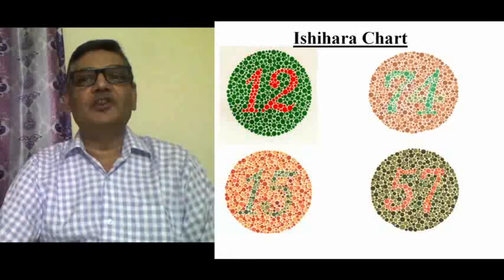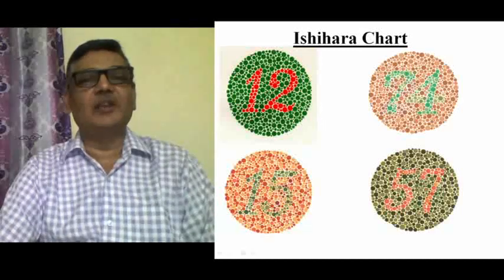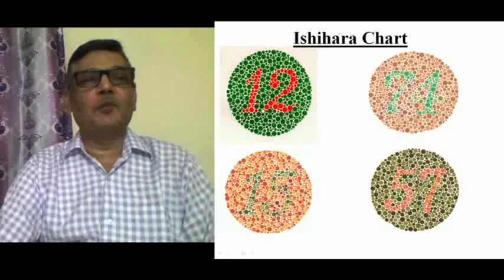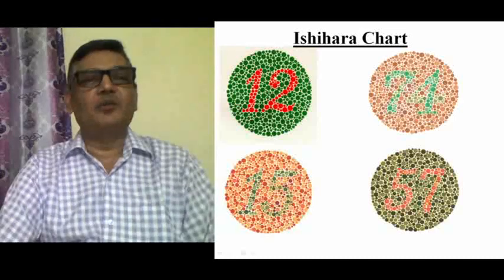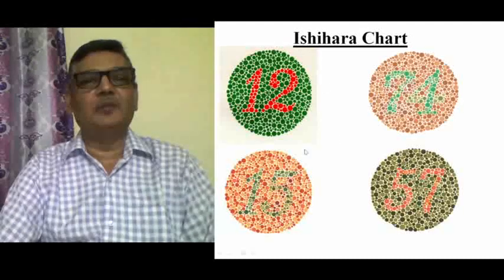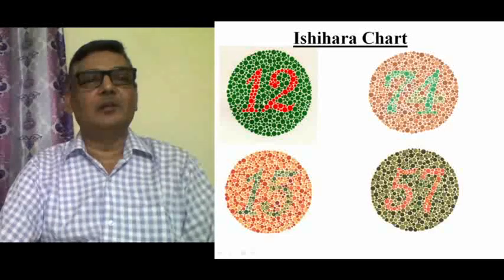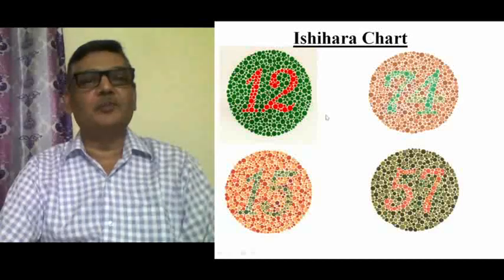It was Ishihara who in 1917 provided a chart containing many circles — here only four circles are shown. If you properly observe these circles, you will find many round spots that vary in their color pattern. They are arranged in such a manner that a specific digit appears in the inner portion of each circle. A red-green color blind person will not be able to exactly identify that number.